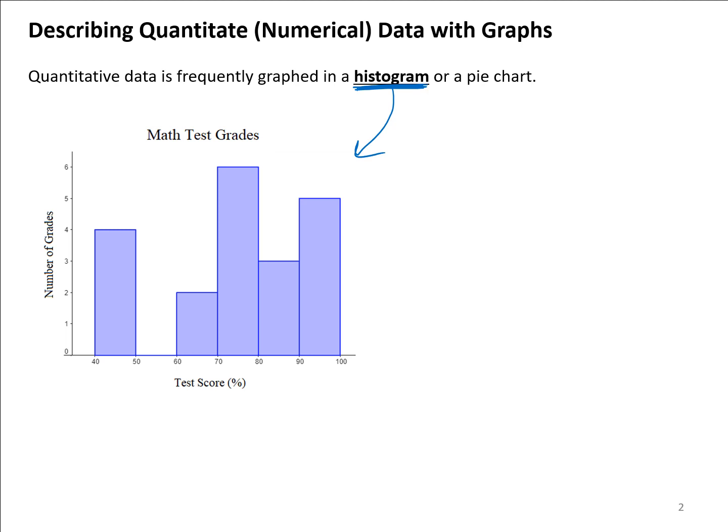A histogram, if you look at this, looks like a bar graph. In fact, it's a bar graph for numerical data. We call it a histogram because it is a little bit different than a bar graph for quantitative data. The reason it's a little bit different is because, first of all, since we're dealing with numerical data, your horizontal axis is going to be a number line.